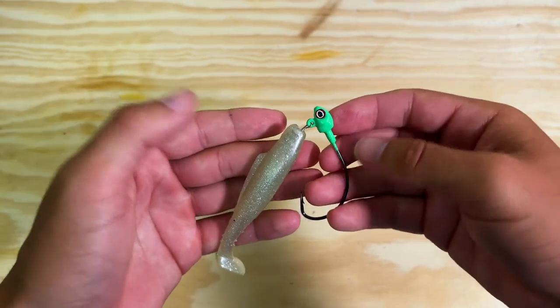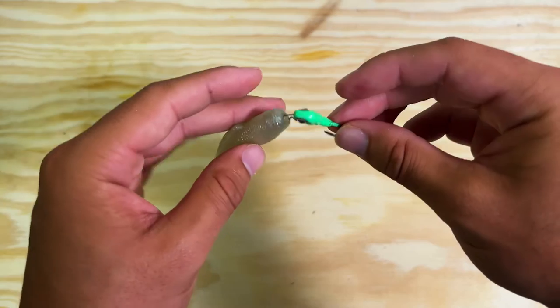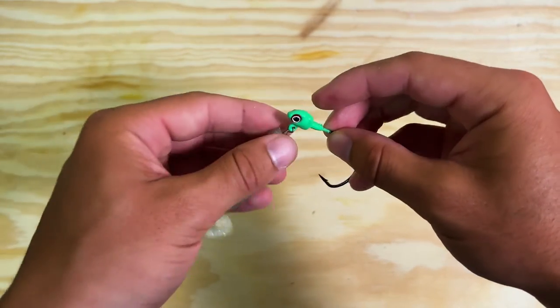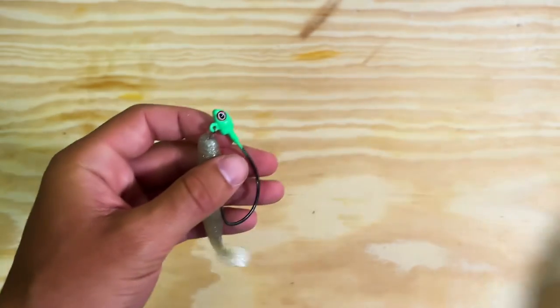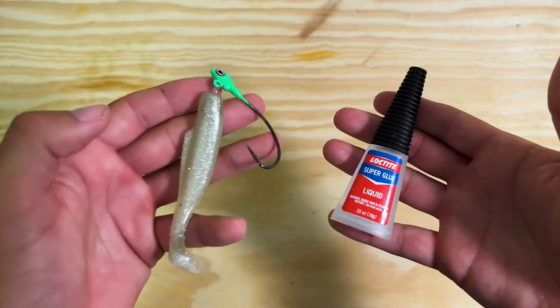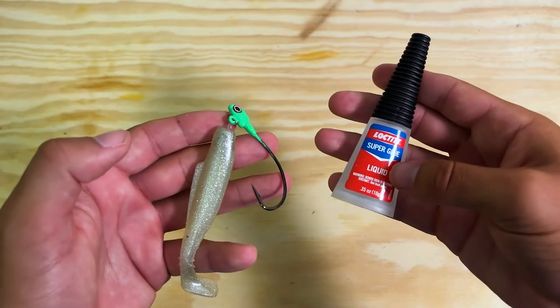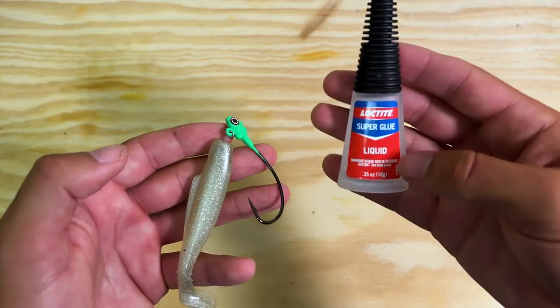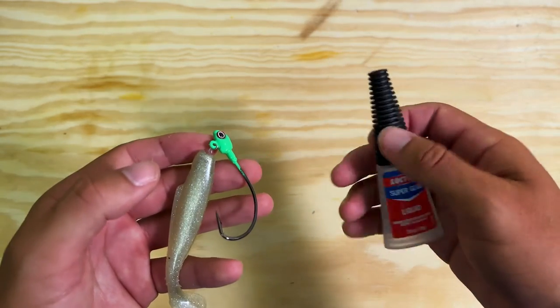Now, an important step that you want to do to make this bait stay on this jig head or stay on the screw lock is Loctite. This will keep this bait on there all day. I don't recommend the liquid. I accidentally bought the liquid a while ago, so I'm using it. The liquid makes a mess. I prefer the standard Loctite.